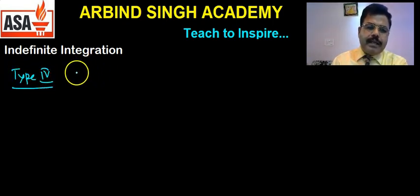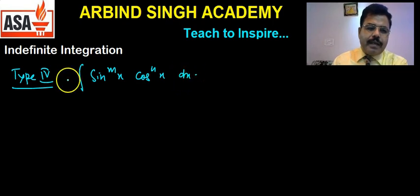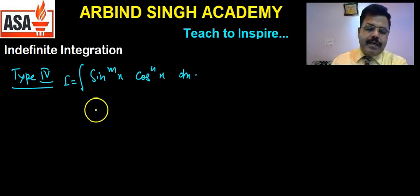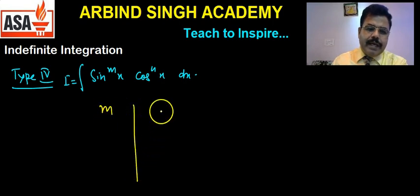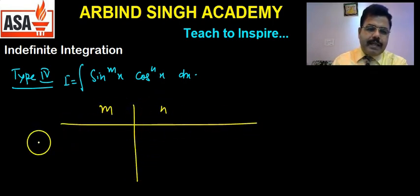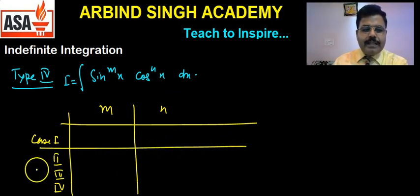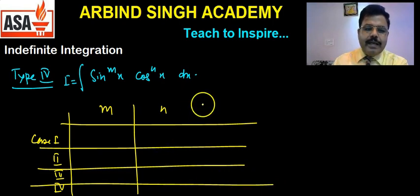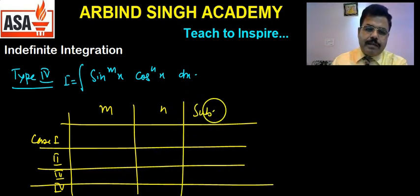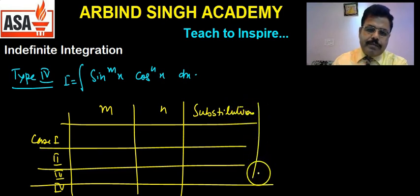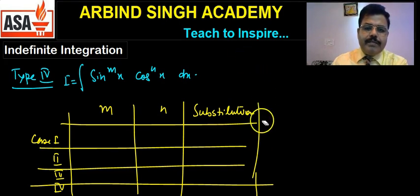Type 4 is what we do if the function is like ∫sin^m(x)·cos^n(x)dx. कई बारे integration इस form का होता है। इस function में m और n के लिए condition होना चाहिए। अगर हम यह समझें कि case first हो सकता है कि m even हो और n odd — यह चार cases बन सकते हैं।